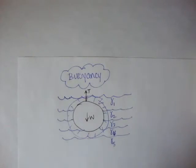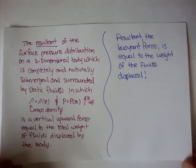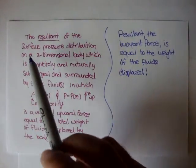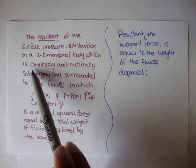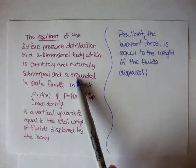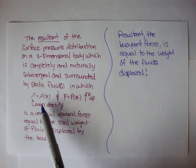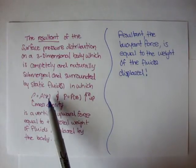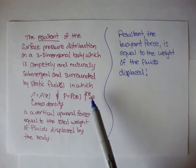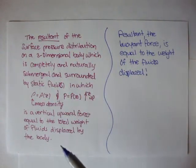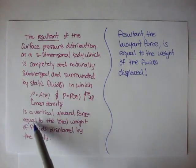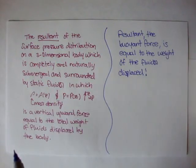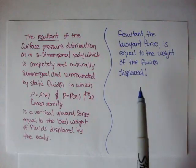Now, let me give you a definition. I have an easy definition, and I have a hard definition. The difficult definition is here in the red, and obviously the easy one is here in the right. So, let's go over this. The resultant of the surface pressure distribution on a three-dimensional body, which is completely and naturally submerged and surrounded by static fluid or fluids, in which rho, the mass density, is equal to rho of z, and p, which is position, is equal to p of z, where z is up. So, all of this depends on depth, and the mass of the body, and even the fluids, is a vertical upward force equal to the total weight of the fluids displaced by the body. What? That was confusing.